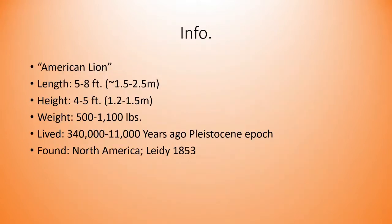Some information about Panthera atrox: the English name is the American lion. It could actually be five to eight feet long — approximately one and a half to two and a half meters. Height: four to five feet, which is 1.2 to 1.5 meters. Weight: 500 to 1,100 pounds. That's a pretty heavy cat, to say the least.